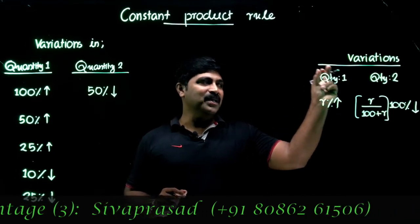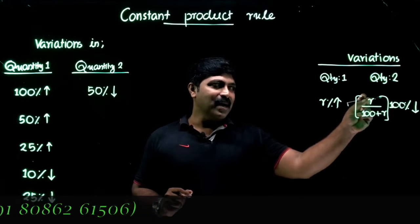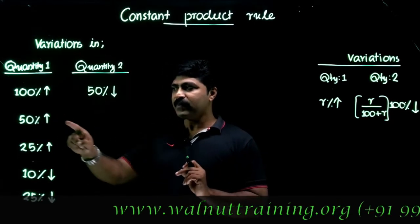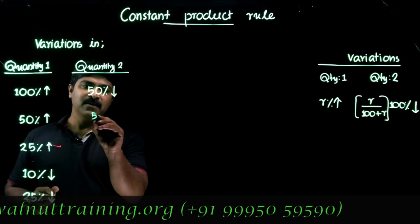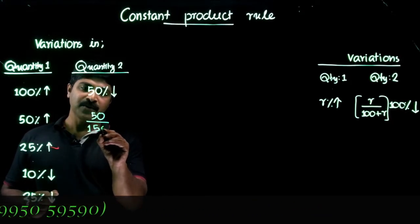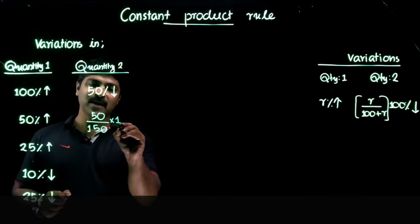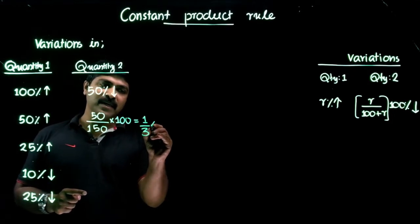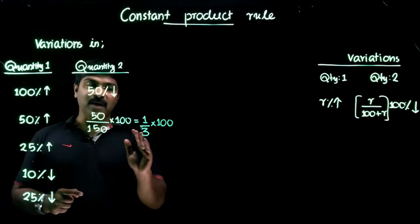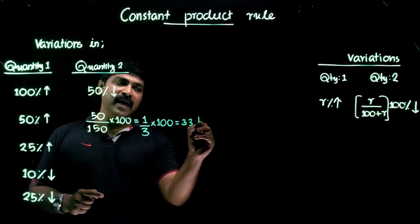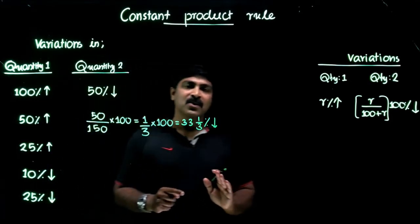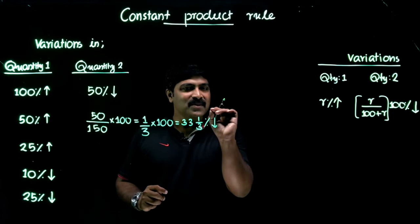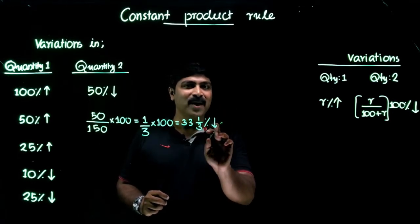So if the first quantity is increased by r percent, the corresponding decrease on the second quantity is r / (100 + r) × 100 percent. Applying this to the 50 percent example: it becomes 50 / (100 + 50) = 50 / 150 × 100, which simplifies to 1/3 × 100 = 33 and 1/3 percent. So if there is a 50 percent increase on the first component, the corresponding decrease on the second component is 33 and 1/3 percent.